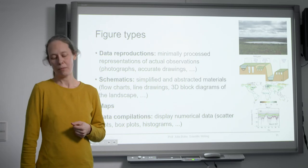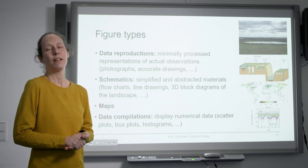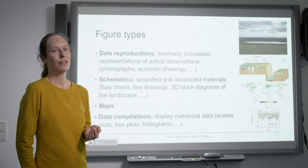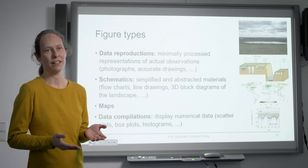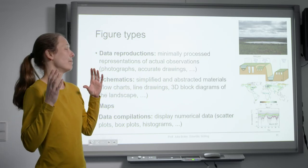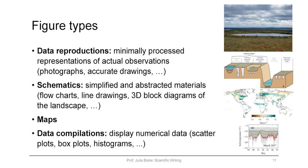So this is the introduction about different figure types. First of all, I will explain what data reproductions are. This is something that's not processed really. So there's just a picture of the landscape, for example. This is a classical example. You could also think of an accurate drawing. Then the next part is schematics. This is already simplified. Things like a flow chart where you show the different steps of work that were necessary to obtain your results. Or the schematic of the landscape where you highlight all the elements that are important.